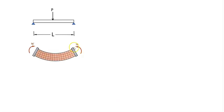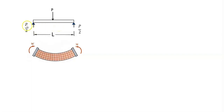Suppose we have this beam with length L between these two fixed supports, and we are applying load P at the middle, and we are in the elastic region. As the load is applied in the middle, the reaction forces would be equal at each of these fixed supports, so we would have P over 2 reaction forces at each of these two supports.